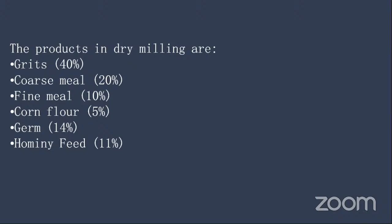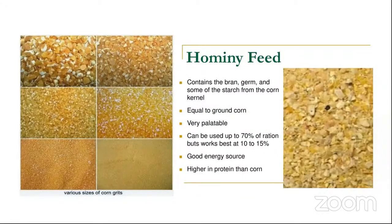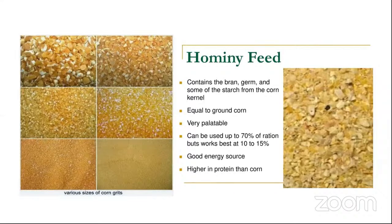Hominy feed contains some starch, bran, and germ, making it a very good source of protein. When the bran and germ are removed along with some starch and proteins, the protein content in hominy feed is elevated because protein was present in the bran, germ, and endosperm portions. It is considered a very good energy source and can be used as poultry feed — it can be given to poultry birds as a good source of protein.